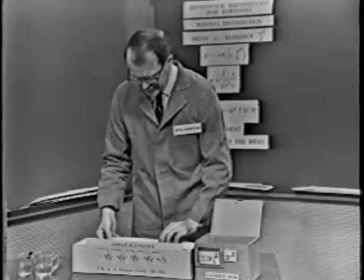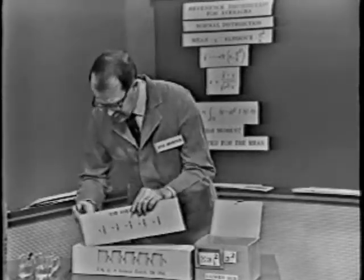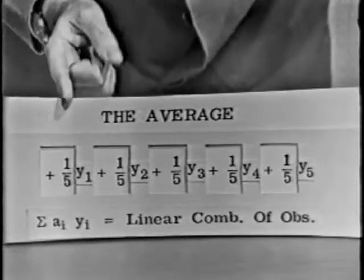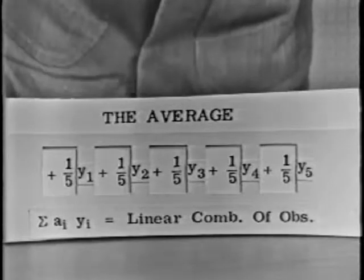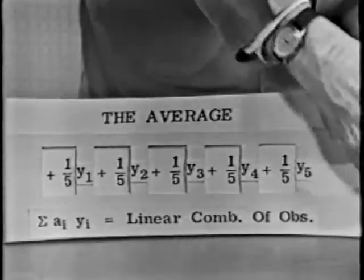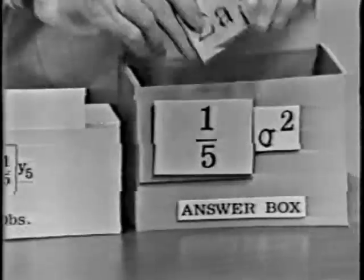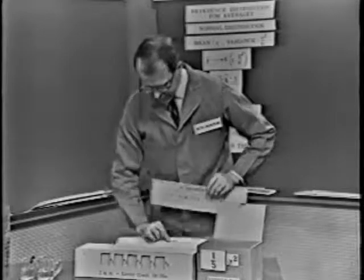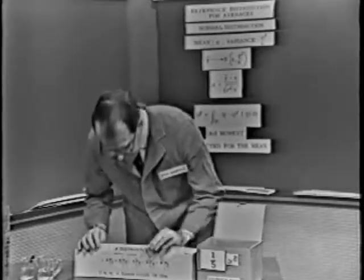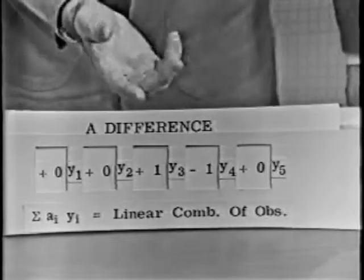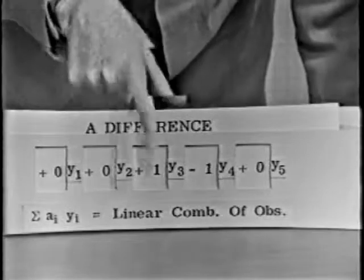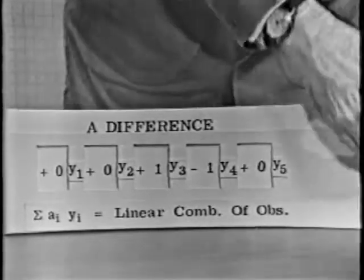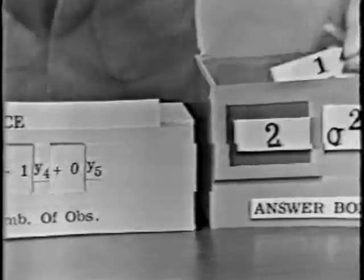Now watch it work. Let's go back and get the average — that's a linear statistic we were playing with a little while ago — and let's get the variance of the average. It says take the coefficients, square them, and sum them up. Well, each coefficient is one-fifth. You square one-fifth, you get one-twenty-fifth, and then there are five one-twenty-fifths. So the variance of this average happens to be one-fifth sigma squared. How about the variance of a difference? The variance of the difference is two sigma squared, because the first coefficient is plus one, another coefficient is minus one, and all the other coefficients are zero. If you take the sum of squares of those coefficients, you come out equal to two. So the variance of a difference between two observations is equal to two sigma squared.